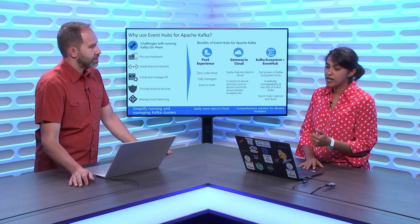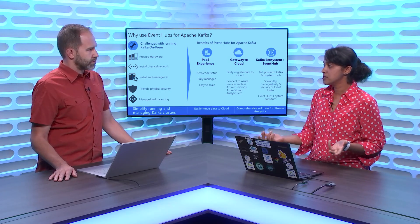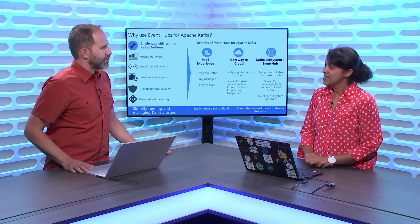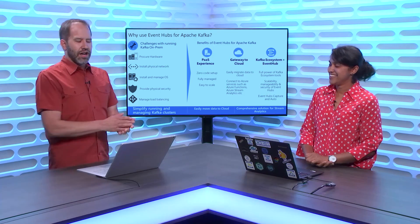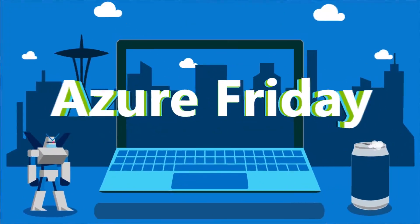You get not only the wider Kafka ecosystem with Event Hubs, but also the wide Azure Event Hubs ecosystem alongside Kafka — the mix and match works. You can use Stream Analytics, Azure Functions, Azure Blob Storage, Cosmos DB, and everything else Azure offers. Thank you so much for sharing that with us. I'm learning all about Azure Event Hubs and Apache Kafka today on Azure Friday.